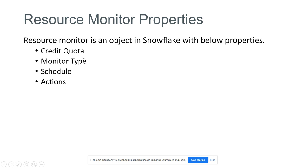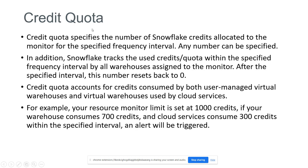A resource monitor is a Snowflake object with the following properties: credit quota, monitor type, schedule, and actions. Credit quota specifies the number of Snowflake credits allocated to the monitor for a specified frequency interval. For example, if I set the credit quota as 1000 credits, the monitor tracks the warehouses and when it meets that 1000 credit limit, it will perform some action like sending an alert notification or suspending the virtual warehouse.